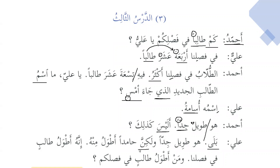Walakinna — and Lakinna is one of the sisters of Inna. Walakinna Hamidan atwalu minhu — but Hamid is taller than him. So after walakinna, ismu walakinna will be mansoob and khabaru walakinna will be marfu', as we can see here. Atwalu minhu is comparative because we have min after atwalu — so that means it is comparative.